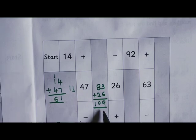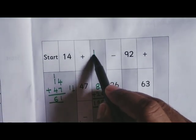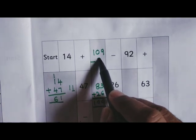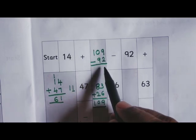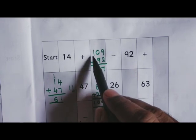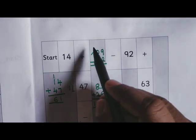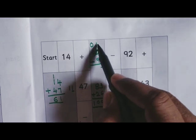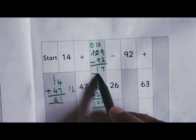109 minus 92. 9 minus 2 is 7. And here 0 minus 9 we can't do. So we'll borrow from the hundred place. Here we'll come 0 and here 10 tens. 10 minus 9 is 1. 17.